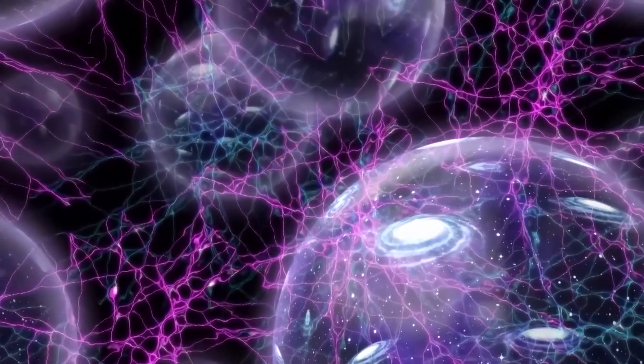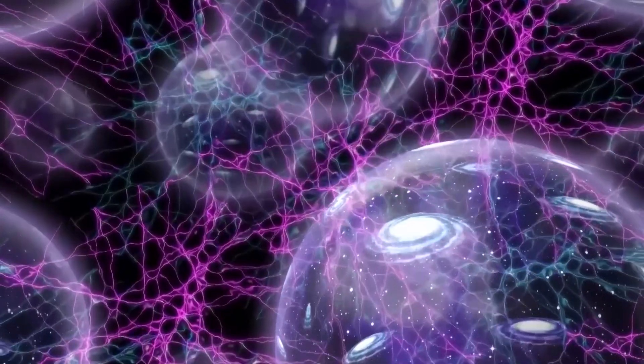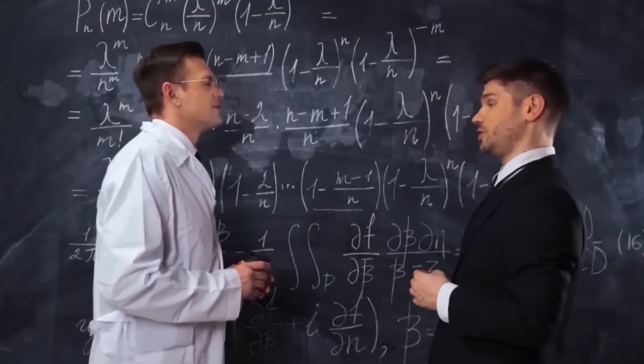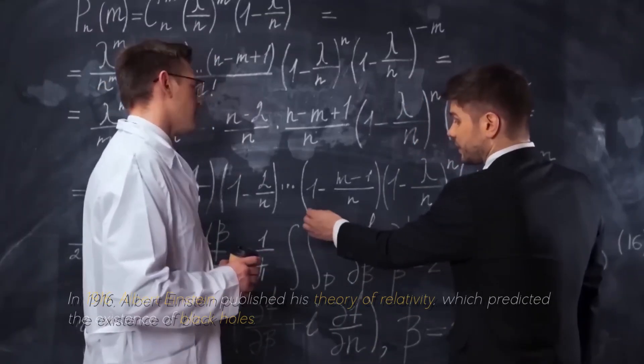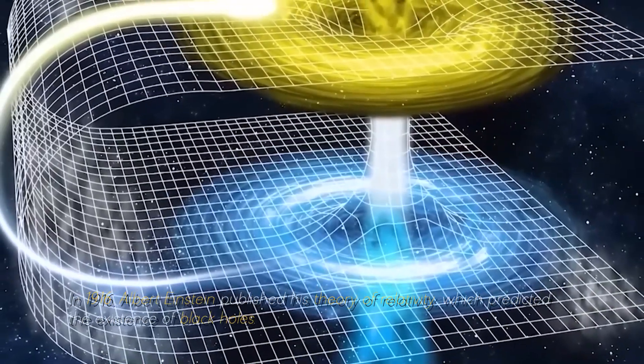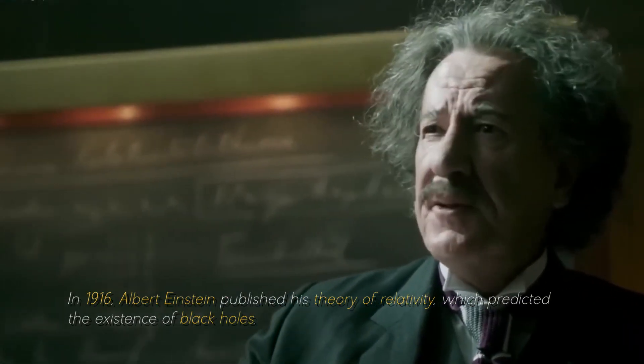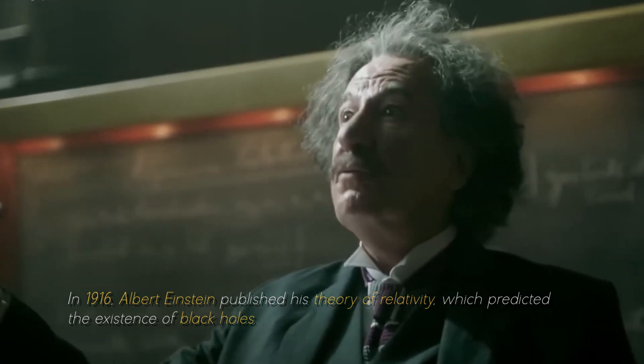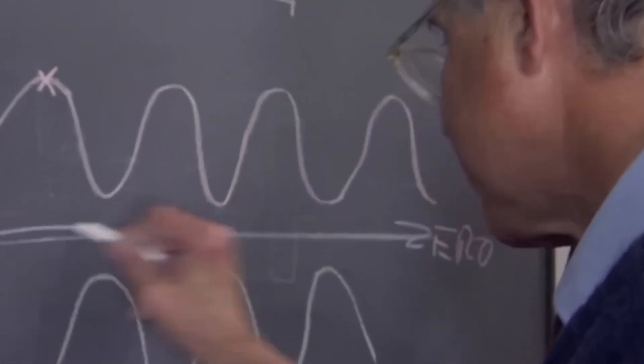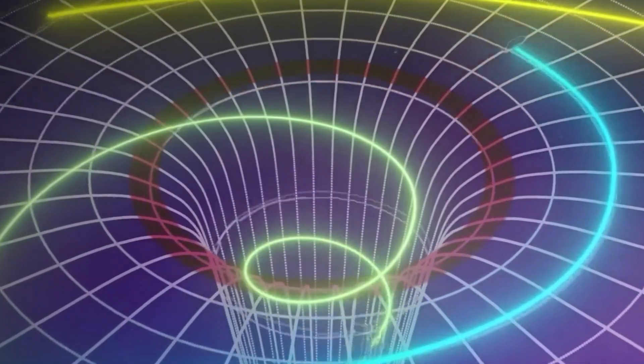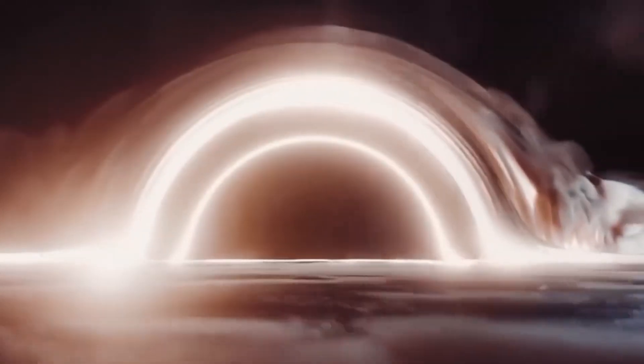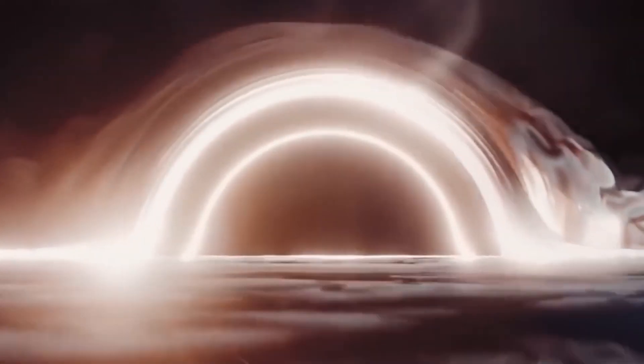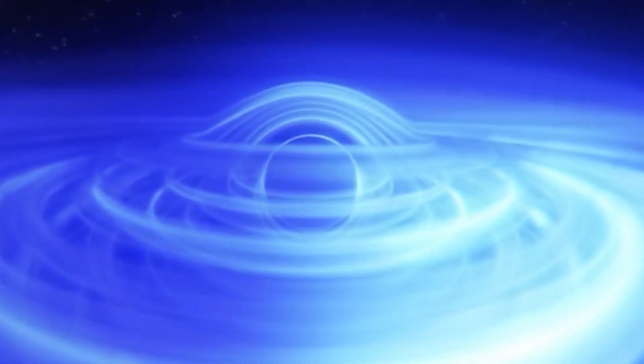Although many of us have a general idea of what black holes are, there are still some gaps in our knowledge. In 1916, Albert Einstein published his theory of relativity, which predicted the existence of black holes. At that time, the concept of black holes was purely theoretical. It was necessary to wait another 50 years for the scientific community to find evidence of their existence.